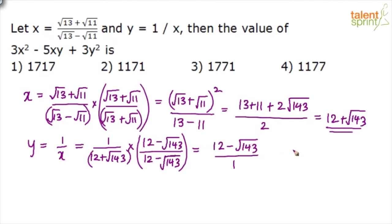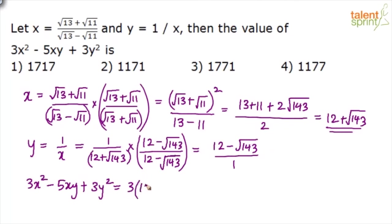Now substitute both values into the given expression: 3x² - 5xy + 3y². Note that in x² and y², the 2ab term will get cancelled — (a + b)² and (a - b)² give +2ab and -2ab respectively, which cancel. If you're smart enough, you can avoid writing the 2ab term in both places. Anyway, let me do it fully and then show you how to cut it down.